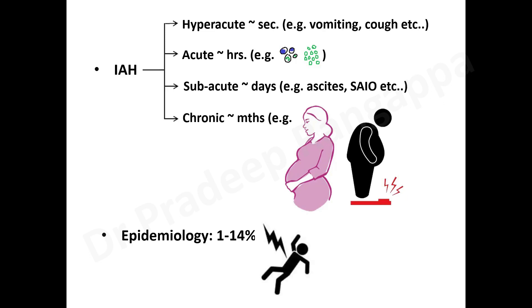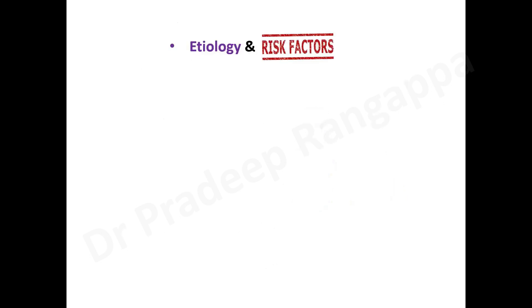Polytrauma is one of the important causes of increased intra-abdominal pressure, and up to 14% of polytrauma patients can develop abdominal compartment syndrome or intra-abdominal hypertension, as referenced in the literature.